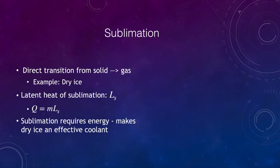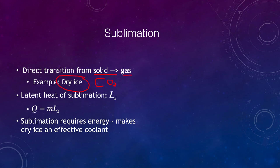Now let's look at the concept of sublimation. Sublimation is a direct transition from a solid to a gas. A common example is dry ice, which is carbon dioxide (CO₂) — it goes directly from a solid to a gas, so it can be used to cool things without producing any liquid. In this case, there is a latent heat of sublimation corresponding to this direct solid-to-gas phase change. Since it takes energy to sublimate, it cools things down, which is what makes dry ice such an effective coolant.